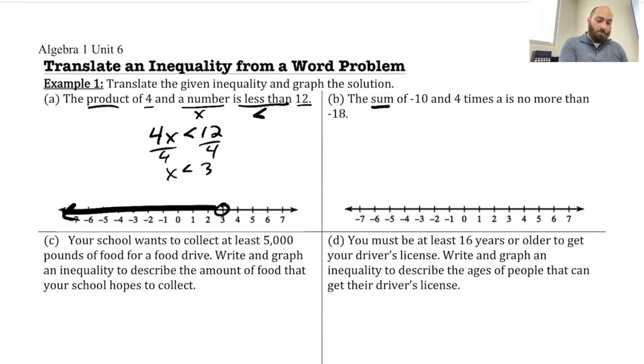So we got here keywords, the sum of negative 10 and 4 times a is no more than negative 18. This one's a little bit trickier. So we've got sum, we know we're going to be doing addition. So we have negative 10 and something. So I can go ahead and start those off as negative 10 plus something. 4 times a, so that is just 4a, is no more than.